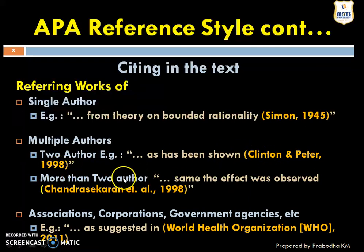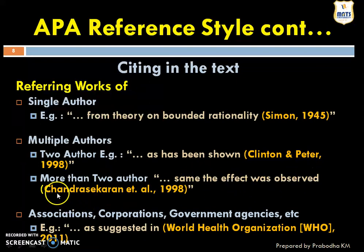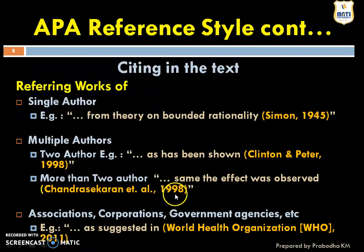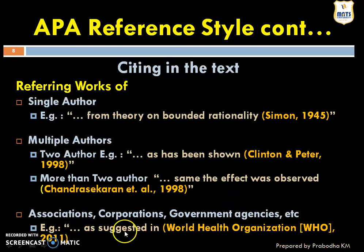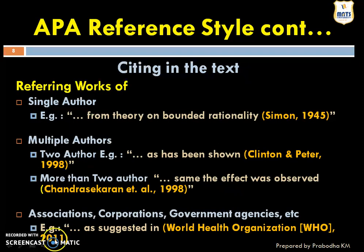If there are more than two authors — whether four, five, or more — we write the last name of the first author followed by 'et al.' and the year of publication. For example, 'the same effect was observed (Chandrasekharan et al., year).' For referring associations, corporations, and government agencies, we use their complete name — for example, 'as suggested in World Health Organization, 2011.'